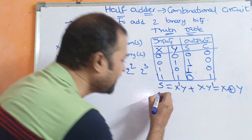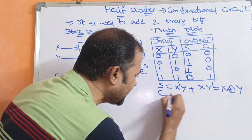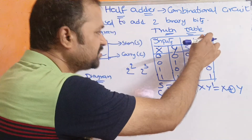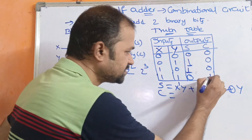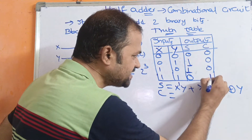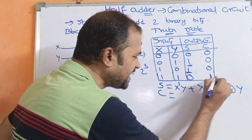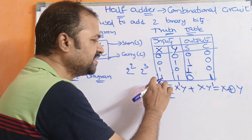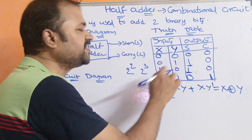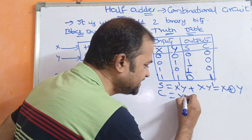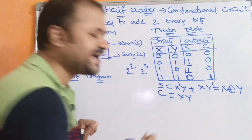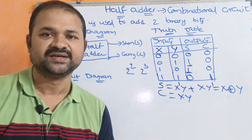Now let us evaluate carry. Looking at the carry column, carry is 1 when x is 1 and y is 1. So we can write carry as x AND y, i.e., x·y.